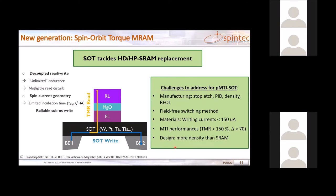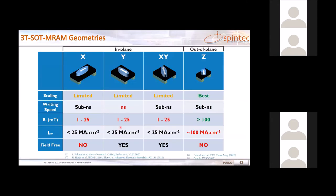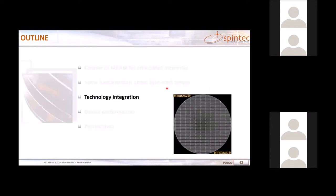Key challenges to address for SOT MRAM include: how to manufacture it, how to achieve field-free switching, what the material requirements are, how to improve MTJ performance, and how to become competitive with SRAM in terms of write/read performance and density. For the MTJ configuration, I will focus only on the out-of-plane geometry, which from an industrial perspective is the most adapted for scaling.